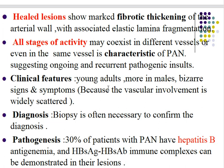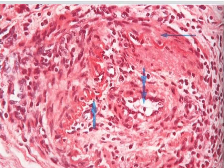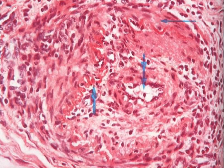Diagnosis of polyarteritis nodosa depends mainly on biopsy, which is often necessary to confirm the clinical suspicion. Regarding pathogenesis, 30 percent of patients with polyarteritis nodosa have hepatitis B antigenemia, and hepatitis B surface antigen and antibody immune complexes can be demonstrated in their lesions.